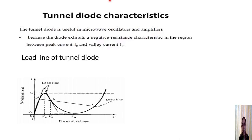Coming to the tunnel diode characteristics: tunnel diodes are used as microwave oscillators and amplifiers because the diode exhibits a negative resistance characteristic in the region between peak current IP and valley current IV. As already seen in the IV diagram, between IP and IV the diode exhibits negative resistance. It is in this negative resistance region only that the tunnel diode finds applications as microwave oscillators and amplifiers.